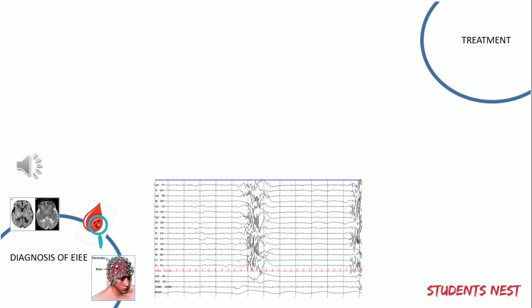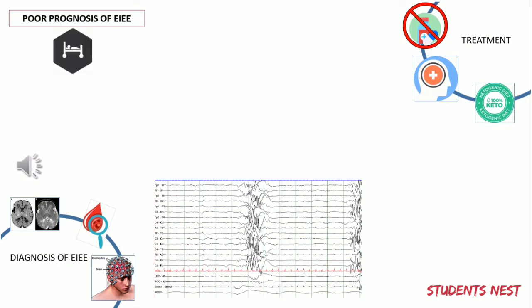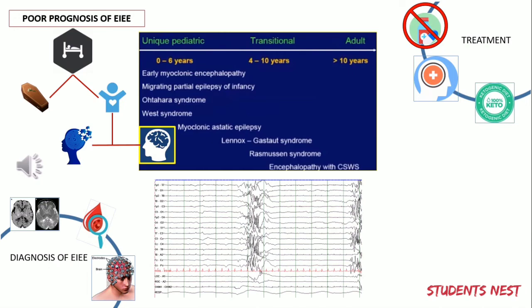Seizures due to EIEE are difficult to treat since they usually do not respond to anti-seizure medication. Corticosteroid therapy with prednisolone or ACTH can help control seizures in some infants. Another option is the ketogenic diet, which forces the body to use fats instead of carbohydrates for energy and for some reason reduces the rate of seizures. EIEE has a poor prognosis regardless of treatment; some children die within the first two years of life, and survivors are left with severe physical and intellectual disabilities. In survivors, there can be a transition of EIEE into other epileptic syndromes as age progresses.